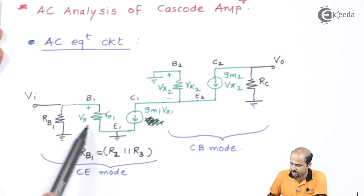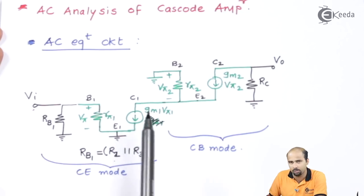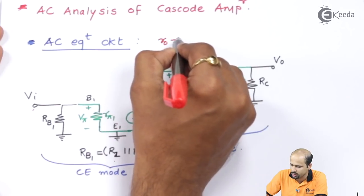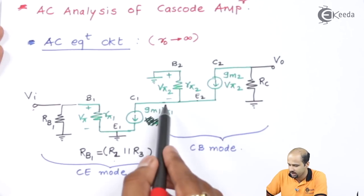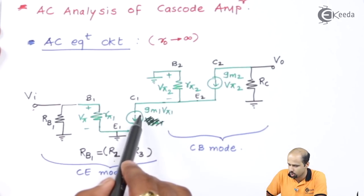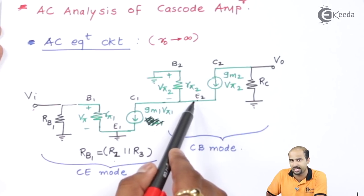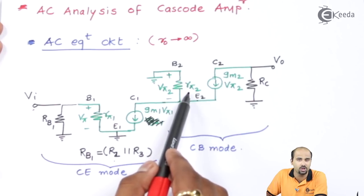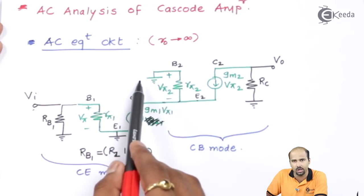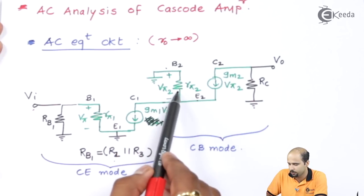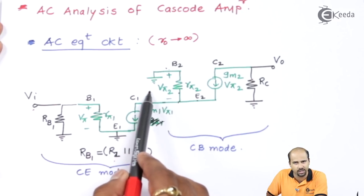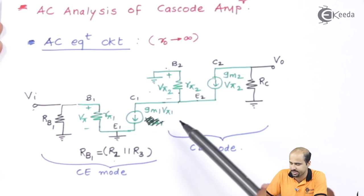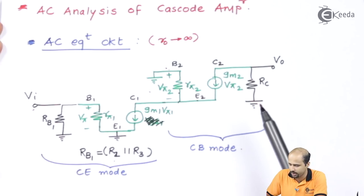We have drawn the BJT1 AC equivalent model in CE mode. At the output of BJT1, ro tends towards infinity, giving an open circuit. The collector of Q1 is directly connected to the emitter of Q2, which is in CB configuration. In CB, the input resistance r5 is connected to ground, with emitter and base connected through that resistance while the base is directly connected to ground. At the output side we have RC connected to the output voltage vo.